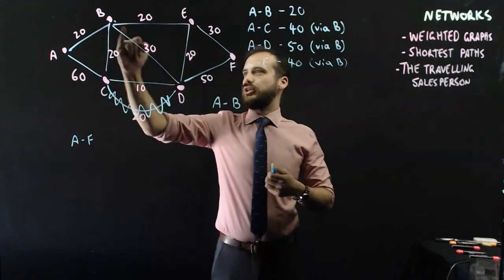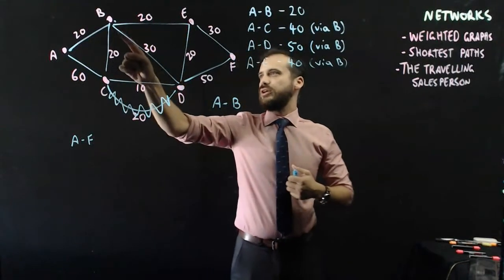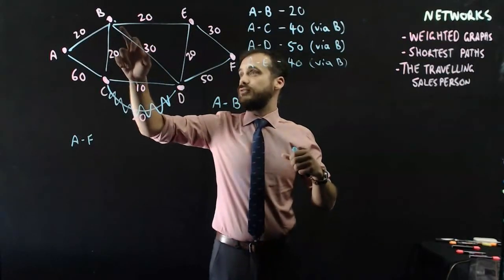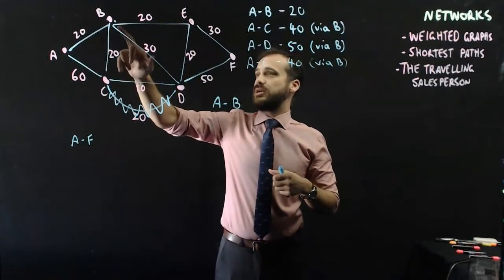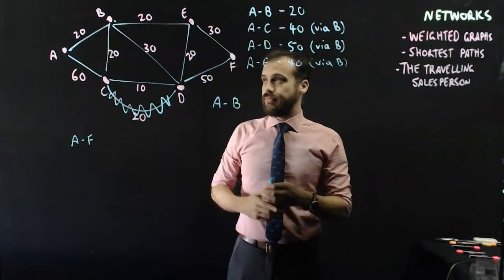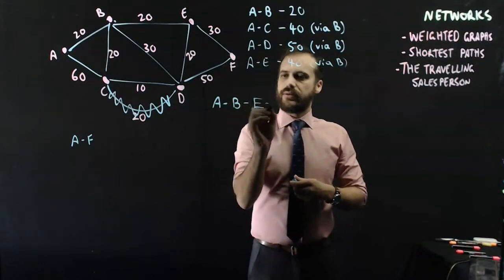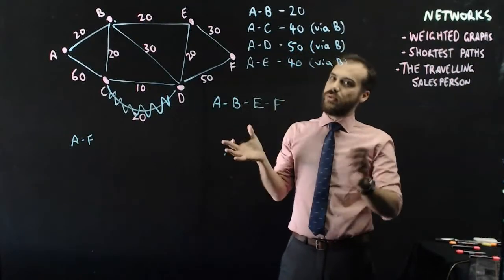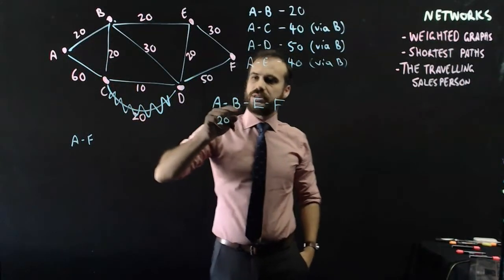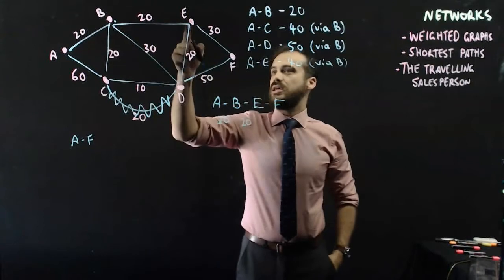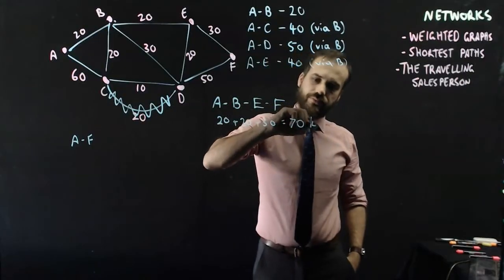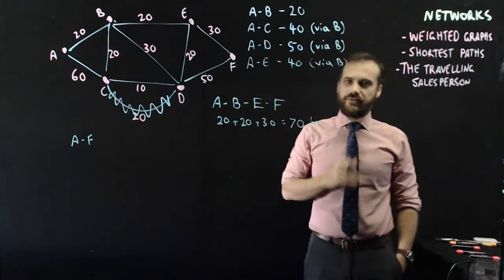Should I go from B to E, or should I go from B to D? Well, if I go from B to E to F, that's going to be 20 plus 30, which is 50. If I go from B to D to F, that's going to be 30 plus 50, which is 80. That's a big number. So, I think I'm pretty well done here. The shortest path from A to F is A to B, which is 20 kilometres, B to E, which is 20 kilometres, E to F, which is 30 kilometres.